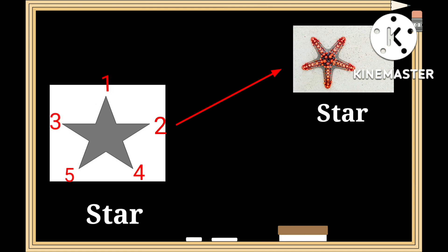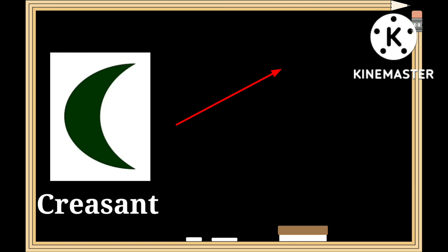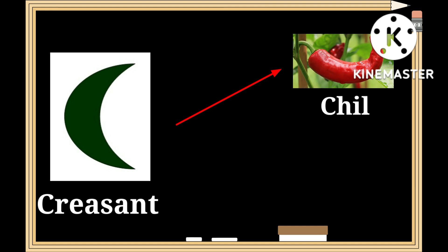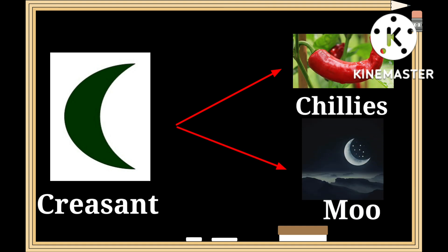A rainbow and an umbrella have a similar shape to that of a semicircle. This is a shape of a star — s-t-a-r. As you can see, a starfish and a flower have a similar shape to that of a star.